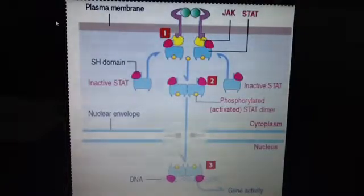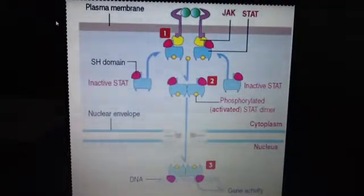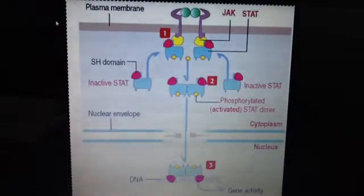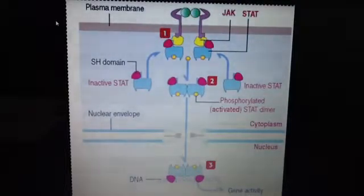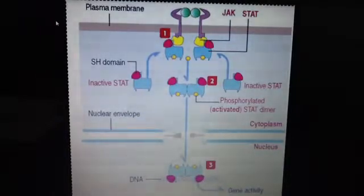Let's take a look at the JAK-STAT pathway. The JAK-STAT signaling pathway can be expressed in white blood cells and is involved in regulation of the immune system. It transmits information from chemical signals outside the cell, through the cell membrane, and into the gene promoters on the DNA in the cell nucleus, which then causes DNA transcription and activity in the cell.